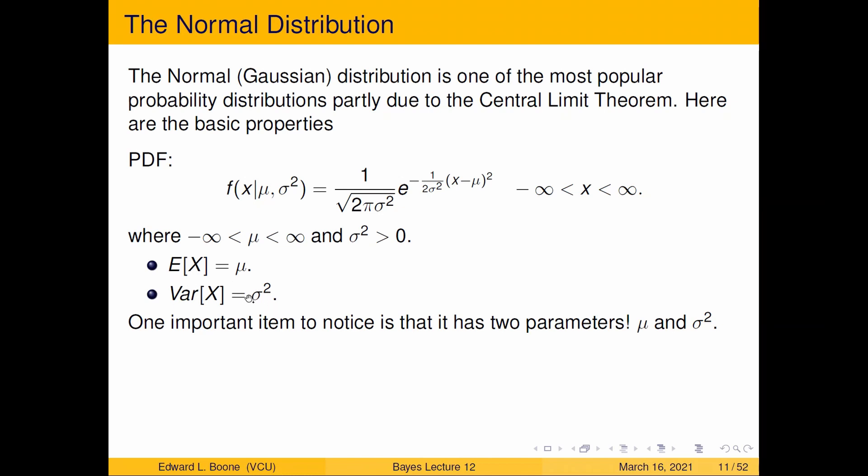Now, I mentioned this before and I'm going to keep mentioning it. This has two parameters in it. So whenever we work with it, we have to worry about dealing with both parameters. Because in order to set a prior distribution, we're going to have to work with both parameters, not just one. So we'll have to set up a prior in some way to make this work.